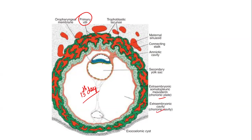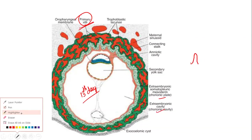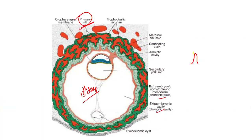I put this picture to focus on primary villi. Primary villi are the finger-like projections of the cytotrophoblast covered by the syncytiotrophoblast. This is called the primary villi.